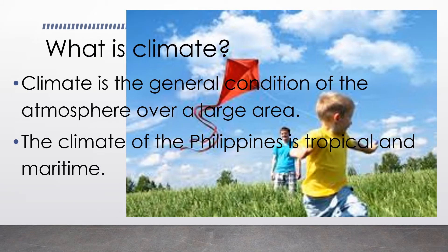Let us review first the meaning of climate. Climate is the general condition of the atmosphere over a large area. The climate of the Philippines is tropical and maritime. It is tropical because of the geographical location of the Philippines on the globe, and it is maritime because we are surrounded by water.